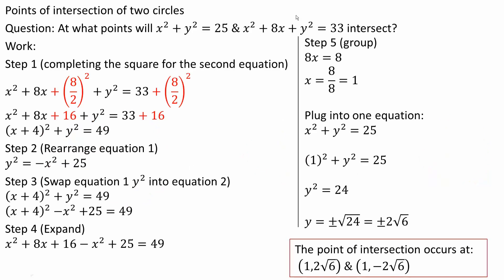The first step is to modify the second equation using the equation of a circle by completing the square. I have an 8x term, so I take 8, divide by 2, and square it. 8 divided by 2 squared is 16, so I add 16 to both sides. Factoring gives (x + 4)² + y² = 49.